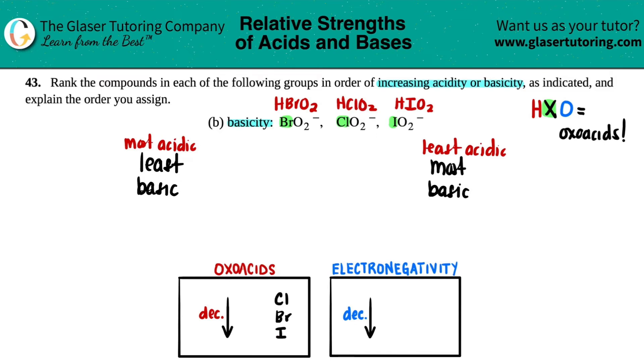As you're going down the periodic table, your acidity will decrease, which means you will be most acidic on the top. Most acidic, aka least basic. The most acidic would be on the top here, and that's the ClO2, so ClO2 would be over here.